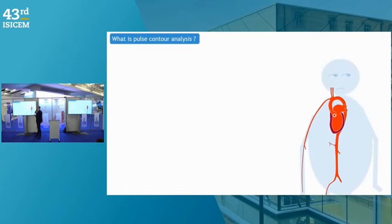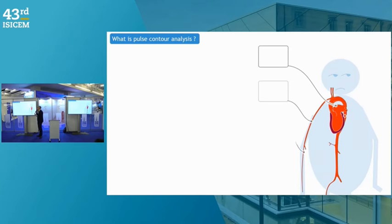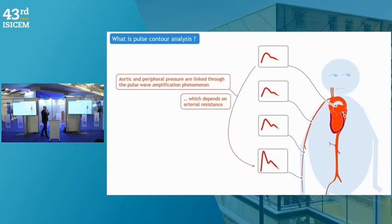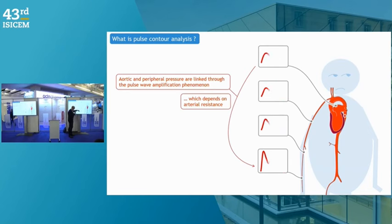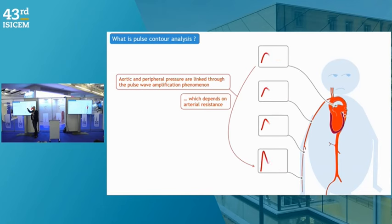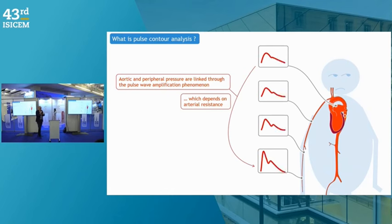Something else must be kept in mind. What we measure at the bedside is not the aortic pressure — it is the peripheral pressure. You know from physiology that the amplitude of the blood pressure signal is amplified from the central aortic level to the peripheral level. So the relationship between waveform amplitude and stroke volume that holds at the aortic level is not true at the peripheral level. This pulse wave amplification phenomenon depends on arterial resistance.